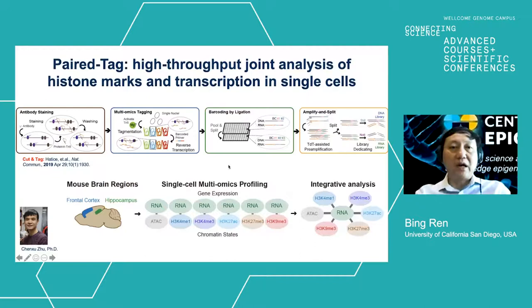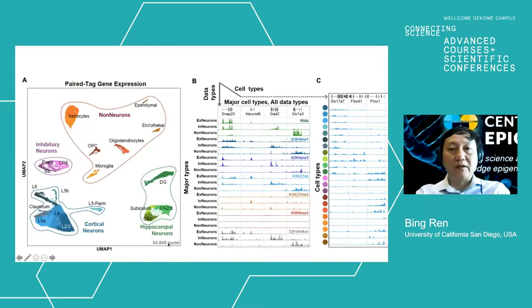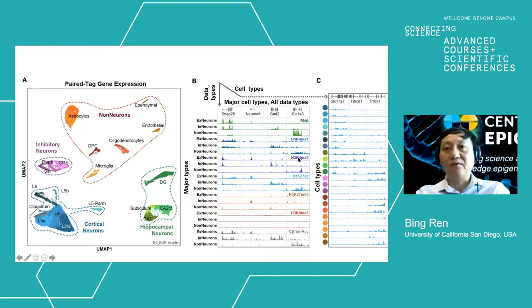To generate cell-specific barcodes, we perform ligation using barcodes in a pool-and-split fashion. Through multiple rounds of pool-and-split, we can generate tens of thousands of unique combinations of barcodes, allowing us to individually interrogate open chromatin generated by the CUT&Tag technology and RNA transcriptome generated by reverse transcription. This strategy was applied to two brain regions in the mouse — frontal cortex and hippocampus — interrogating five histone marks: lysine 4 monomethylation, lysine 4 trimethylation, lysine 27 acetylation, lysine 27 trimethylation, and H3K9 methylation. After sequencing 65,000 nuclei, we can separate them into 22 different cell clusters corresponding to non-neuronal, excitatory neuron, and inhibitory neuron clusters.